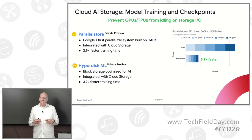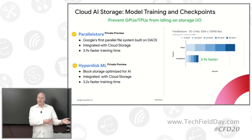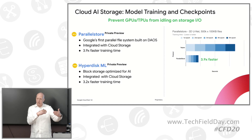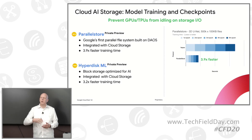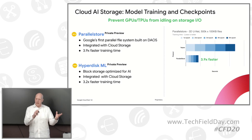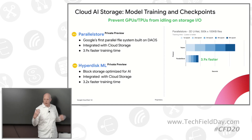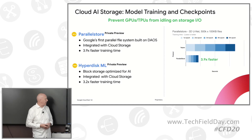The Parallel Store is a parallel file system — you can spin that up in any region, and that data, if you're extracting it from Cloud Storage, is immediately available because it's a file system. The GPUs and TPUs can mount that. You can front-end Cloud Storage with Parallel Store — people extract the data they want to train from Cloud Storage as a data migration. The same is true with FileStore.